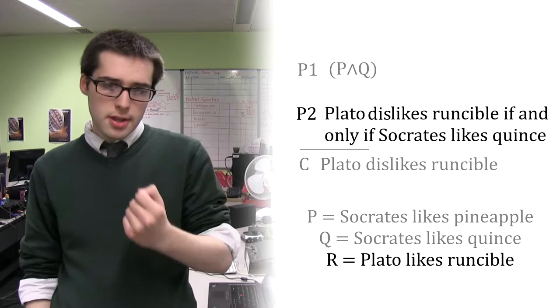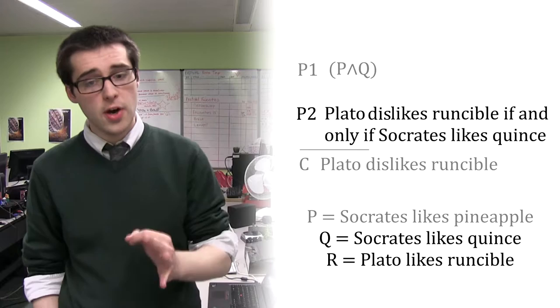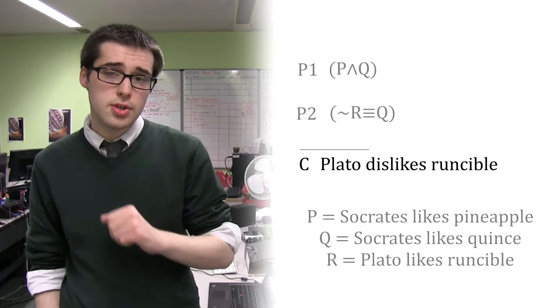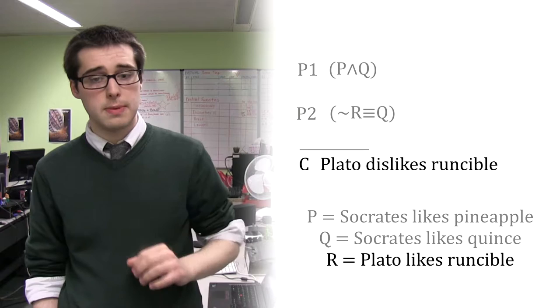Now, because the second proposition of the second premise has already been stated in the first premise, we don't need to add a sentence letter to our key. The conclusion contains one negated proposition. This proposition has also already been stated in the second premise, so we don't need to add another sentence letter to our key.